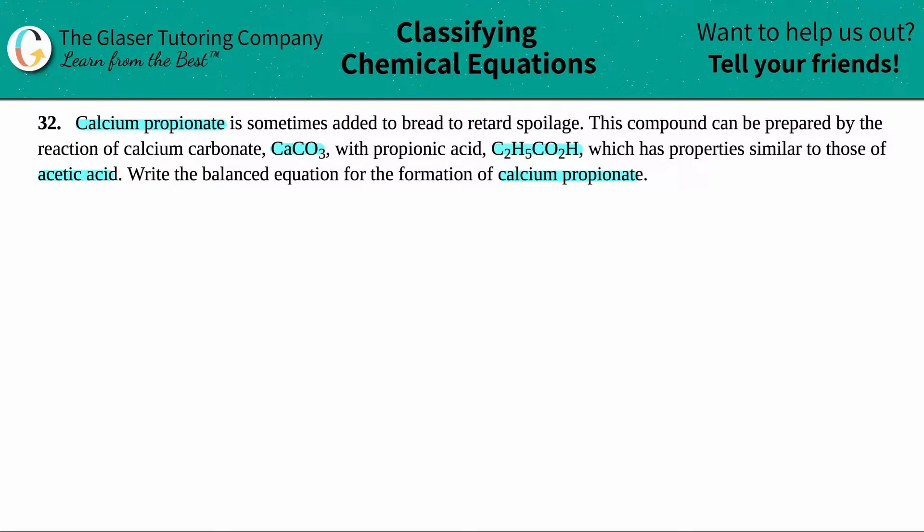Okay, so it seems like we have to form calcium propionate from the reaction of calcium carbonate with propionic acid. So we know our two starting materials. We know that the reaction has to be between calcium carbonate, CaCO3, and it reacts with propionic acid, C2H5CO2H.